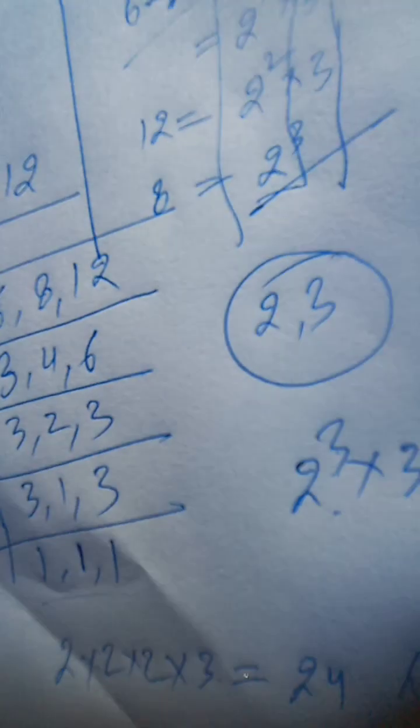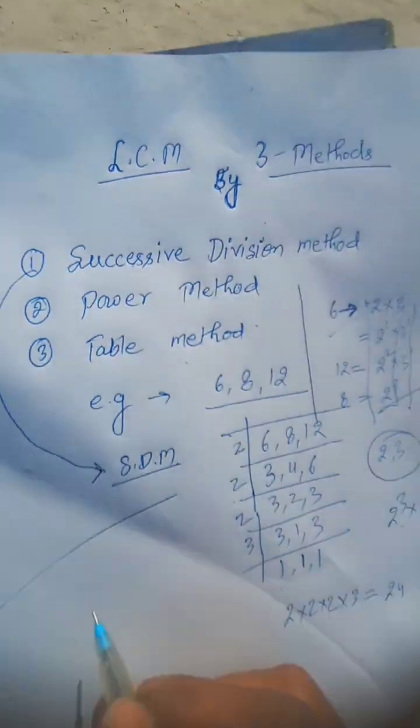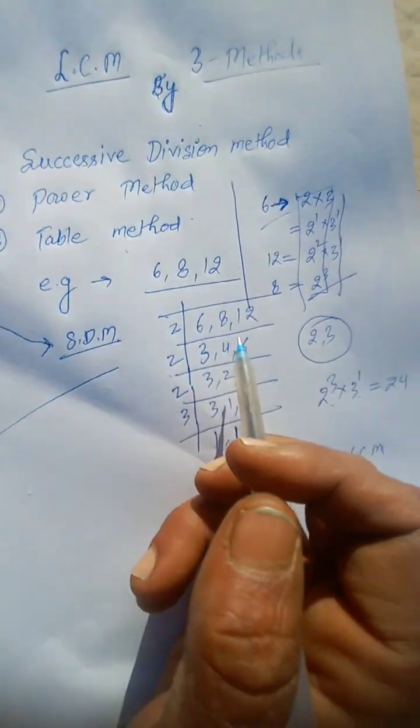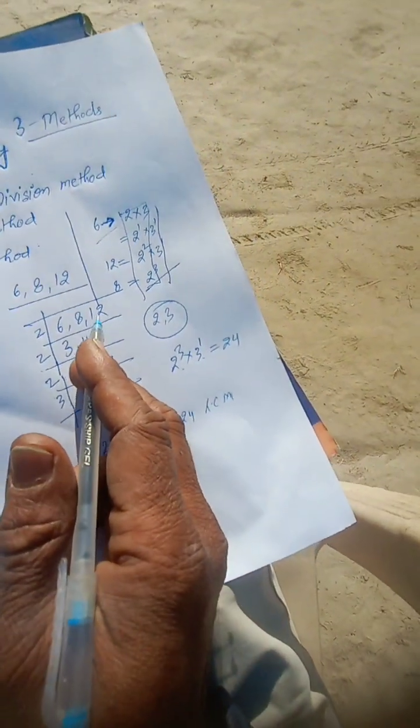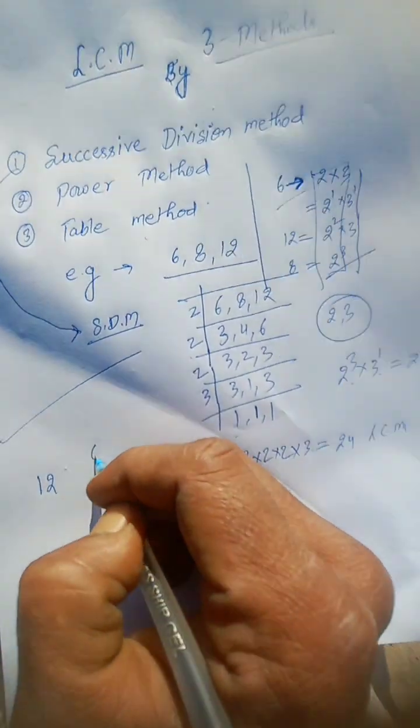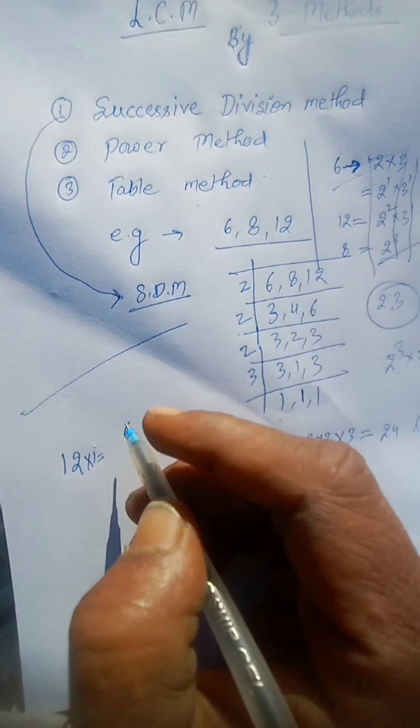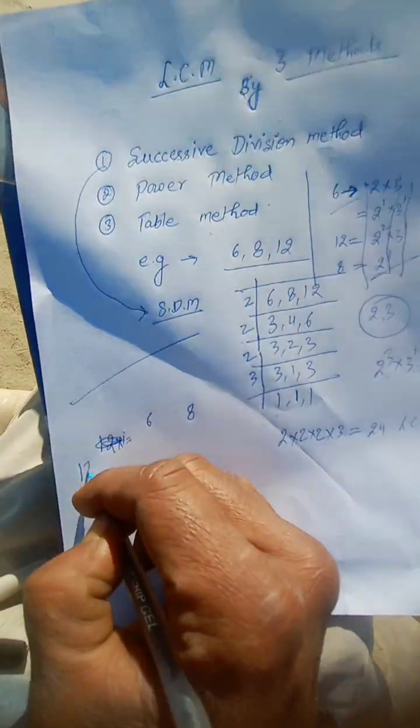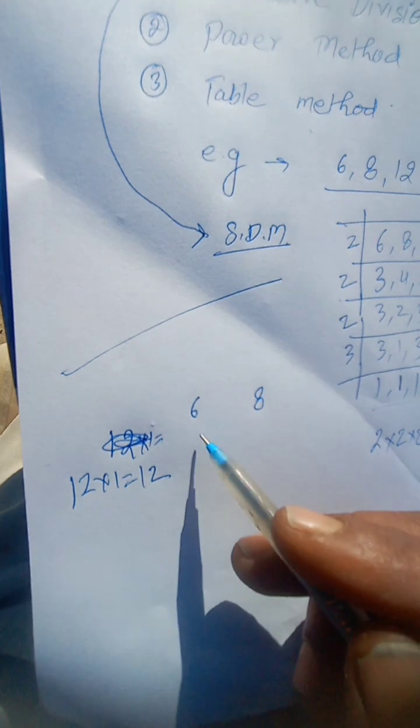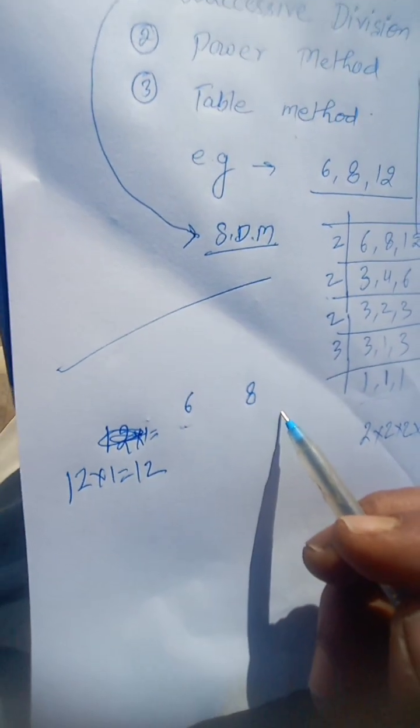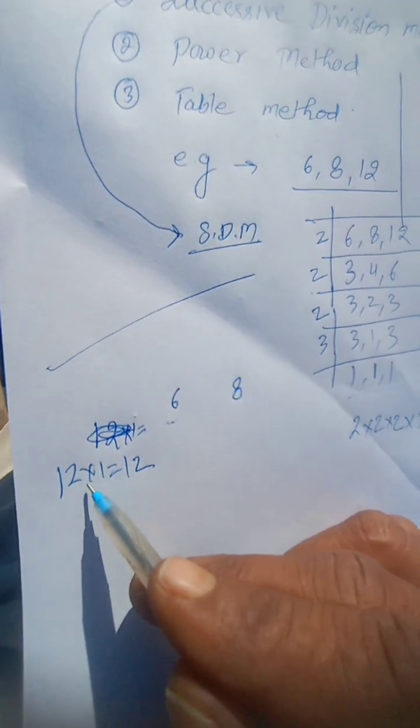Now table method, a very interesting method. You take the greatest number. Here greatest number is 12, and all smaller numbers are set forward: 6 and 8. Then you just read the table. Here 12 × 1 = 12. If a multiple of the greatest number can be divided by all the smallest numbers of that set, then that will be required LCM.